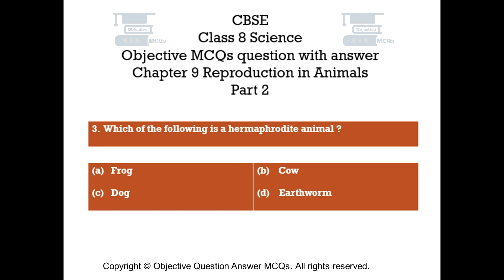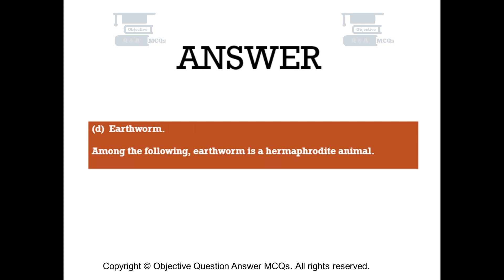Question number 3. Which of the following is a hermaphrodite animal? Option A: Frog. Option B: Cow. Option C: Dog. Option D: Earthworm. The right answer is Option D: Earthworm. Among the following, earthworm is a hermaphrodite animal.